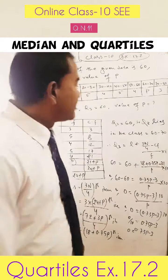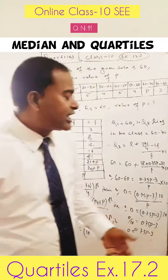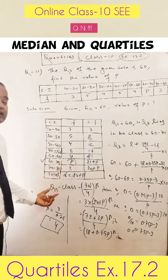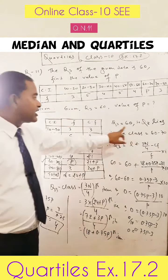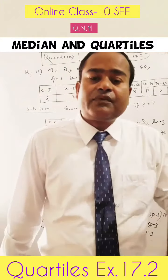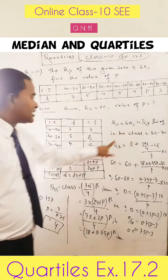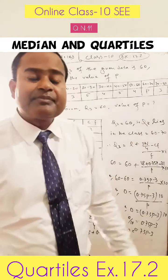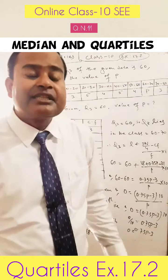But we cannot find the Q3 class directly because the value of P is unknown. So whenever the value of Q3 is given, we take the help of that value to find the quartile class. The value of Q3 is 60. Looking at the class intervals 10-20, 20-30, 30-40, 40-50, 50-60: the value 60 does not lie in the class 50 to 60 because in continuous series the upper limit is always excluded. So we go to the next class interval, 60 to 70. That means Q3 lies in the class interval 60 to 70, which is the third quartile class.